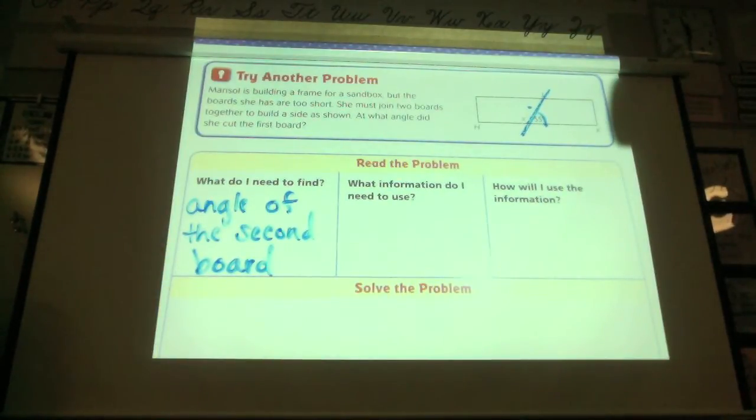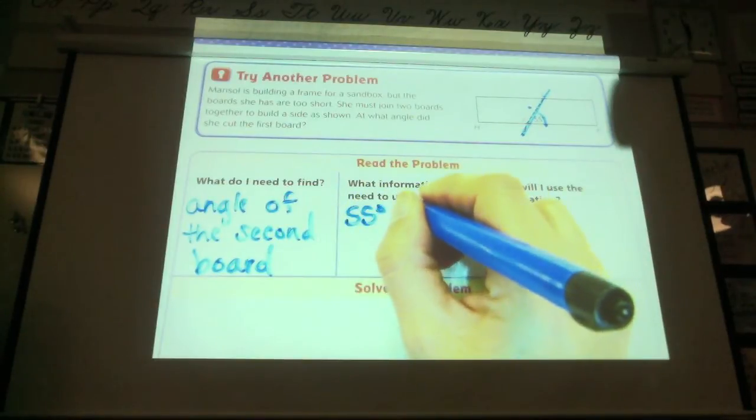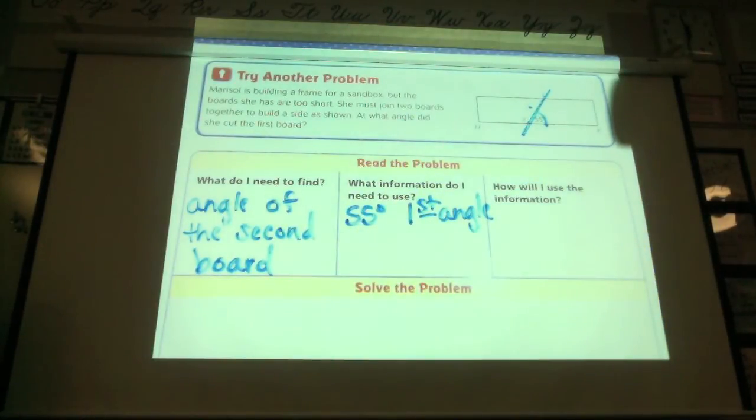Okay, what information do I need to use? What information am I given here that I'm going to need to use to solve this problem? Raise your hand if you can tell me. Okay, Anjali, what's one thing I have? 55 degrees. 55 degrees is the one angle, right? Do I have any other information that I can use? Am I given any other information?